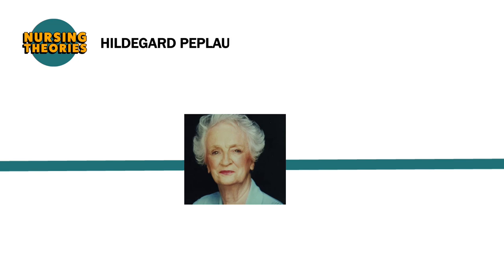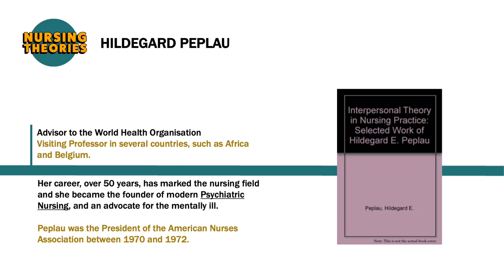Hildegard was a certified psychoanalyst, and in 1950 she developed the first classes for graduate psychiatric student nurses. She was also a member of the College of Nursing at Rutgers University until 1974, when she retired. Hildegard was also an advisor for the World Health Organization and a visiting professor to countries such as Africa and Belgium. Peplau was the president of the American Nurses Association between 1970 and 1972. In 1952, Hildegard Peplau published her theory of interpersonal relations, influenced by Harry Stack Sullivan, Percival Symonds, Abraham Maslow, and Neal Elgar Miller. Her theory focused on psychiatric nursing.